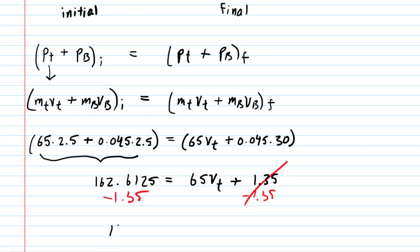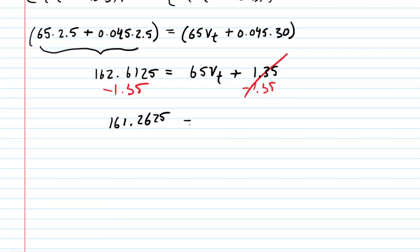On the left hand side we have 161.2625. And then to cap this off we're going to divide both sides of the equation by 65. This will give us the velocity of the thrower after she throws the ball.